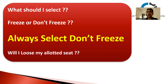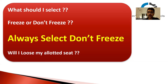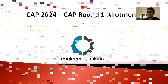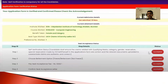So the basic concept is: if you get a better seat, the previous one cancels automatically. If you don't get a better one, it doesn't cancel. That is why everyone should choose Don't Freeze - because the government is giving you a chance to get a better seat, so why would you limit your choices? Now if you want, please take screenshots of this explanation.